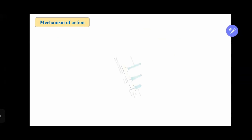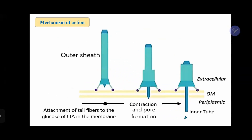The mechanism of action of R-pyocin begins with attachment of the tail fiber to the cell receptor. Then the outer sheath contracts, leading to exposure of the inner tube, which causes pore formation in the cell membrane, resulting in leakage of macromolecules to outside the cell and complete death of the cell.